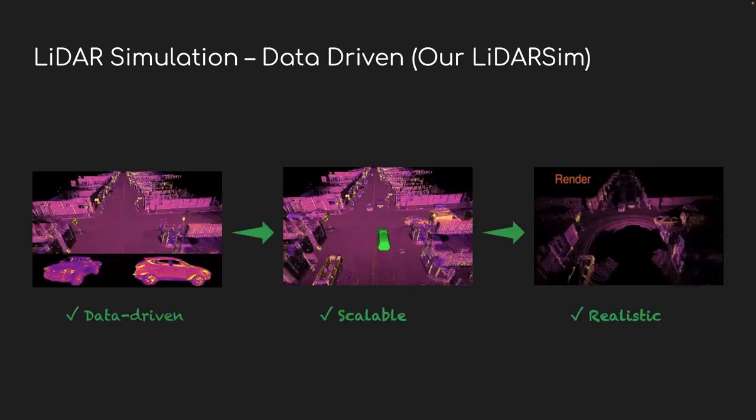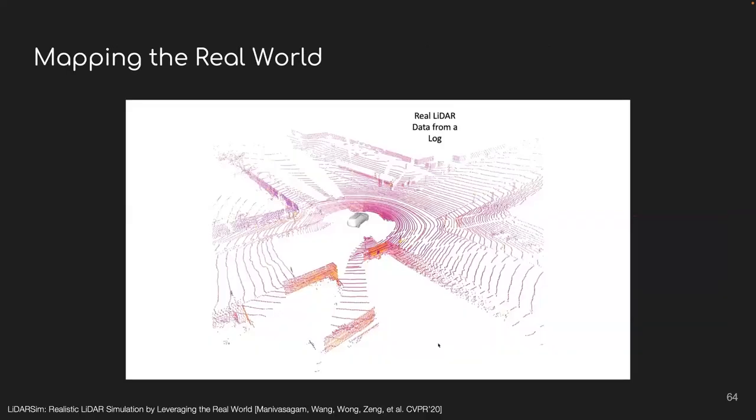And again, the solution is data plus knowledge. So from large-scale data, we automatically build a geometric model of the world including geometry for the static scene as well as objects in the scene. This allows us to cheaply scale our virtual scenarios. And from there, we use a combination of physics-based renderer as well as a learning-based fine-tuner to get more realistic LiDAR simulation. Now, let me illustrate how our approach works in detail.